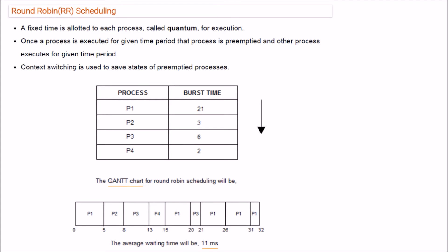Round Robin addresses the disadvantages seen in previous algorithms. Each process is given a fixed chunk of CPU time, called the time quantum — in this example, 5 cycles. P1 runs from 0 to 5 and is then preempted. P2 only needs 3 cycles so it completes within the quantum. P3 needs 6 cycles, runs for 5, and is preempted at time 13.